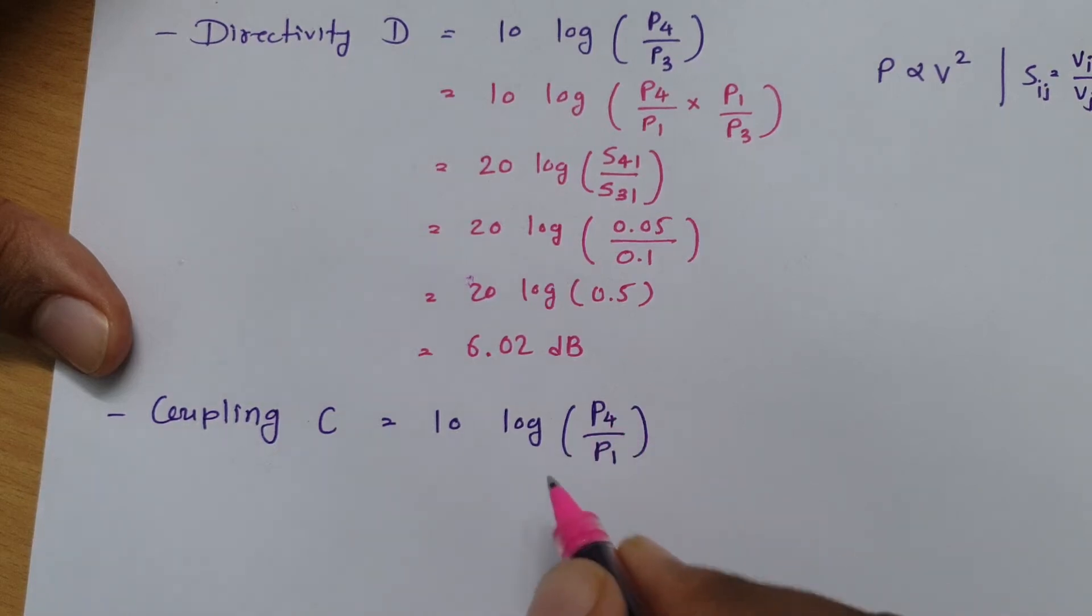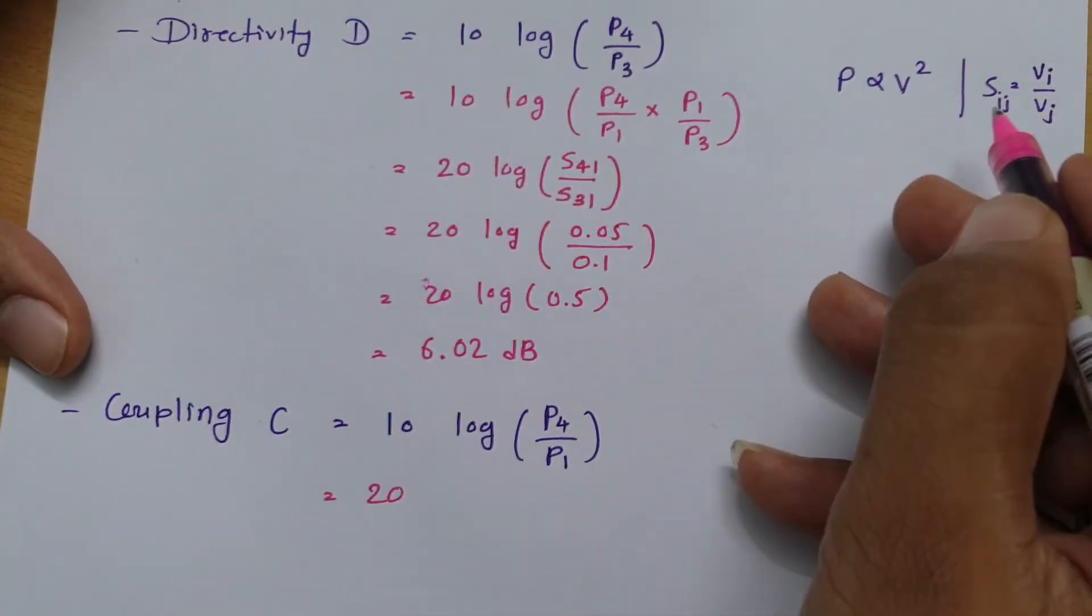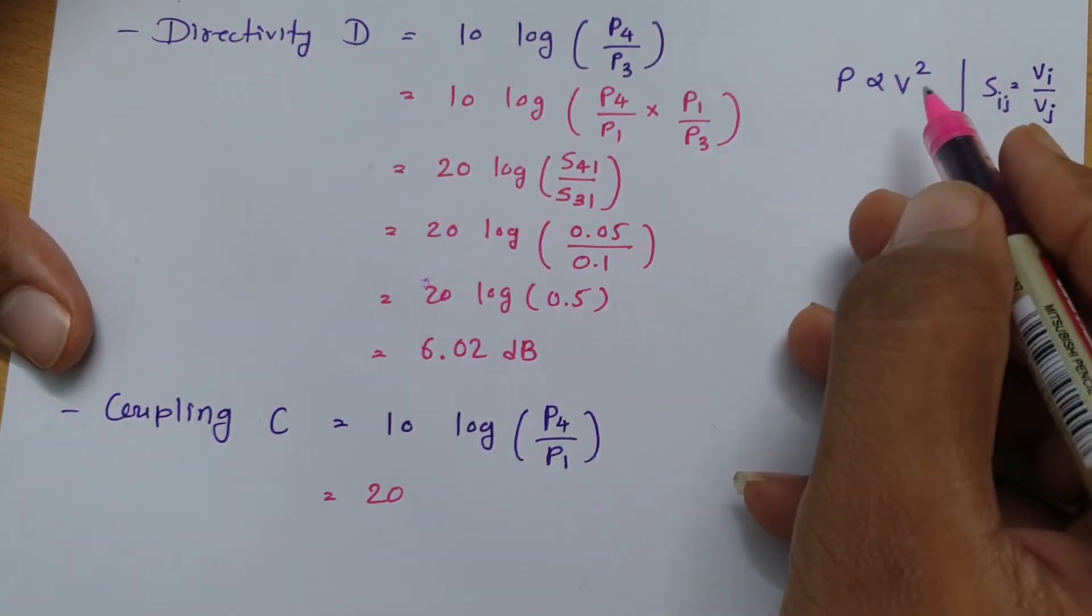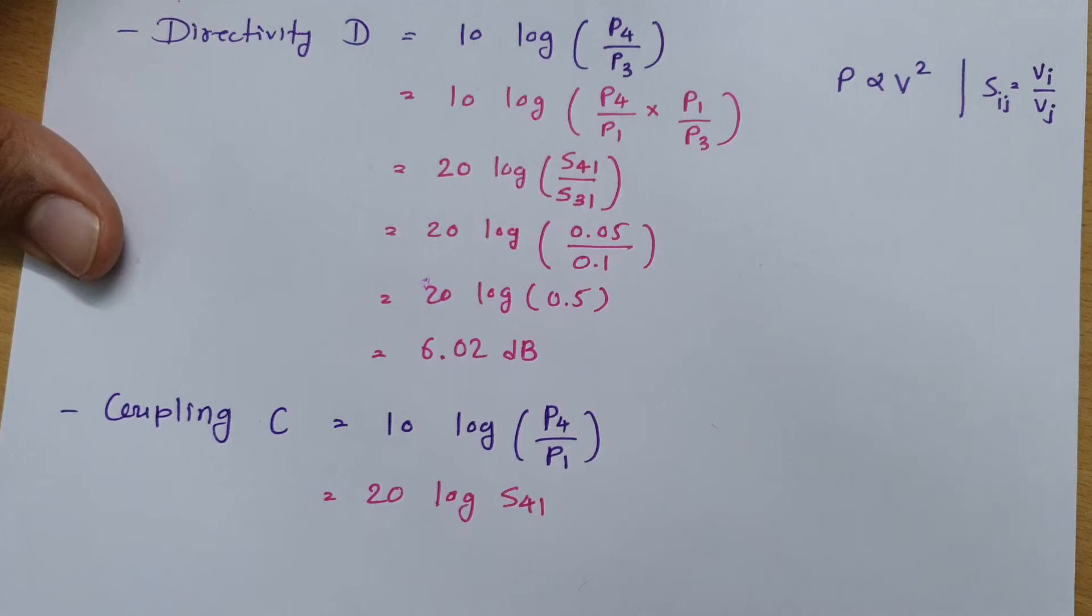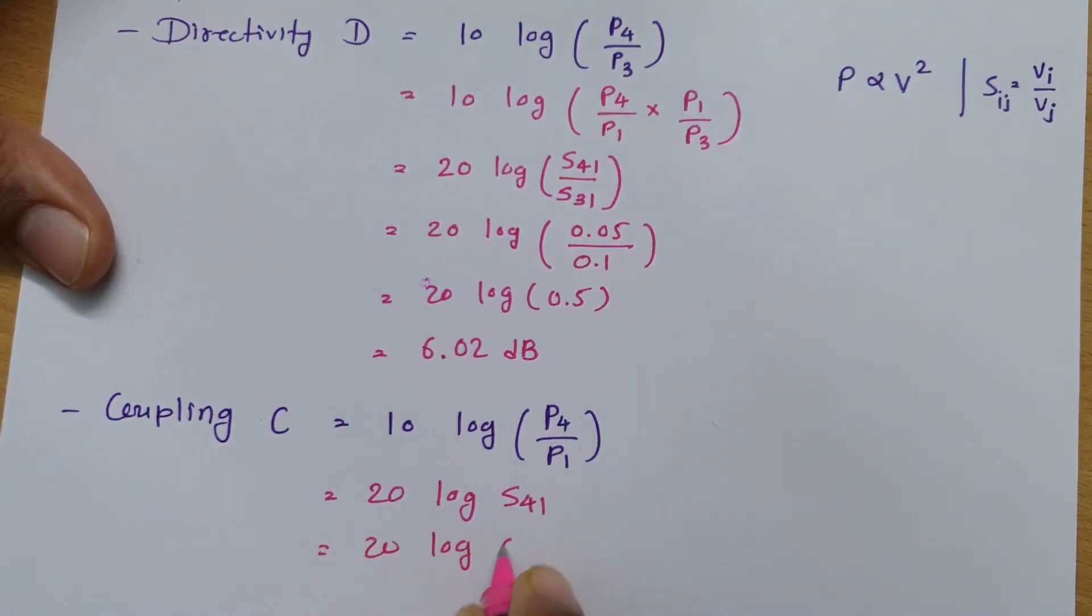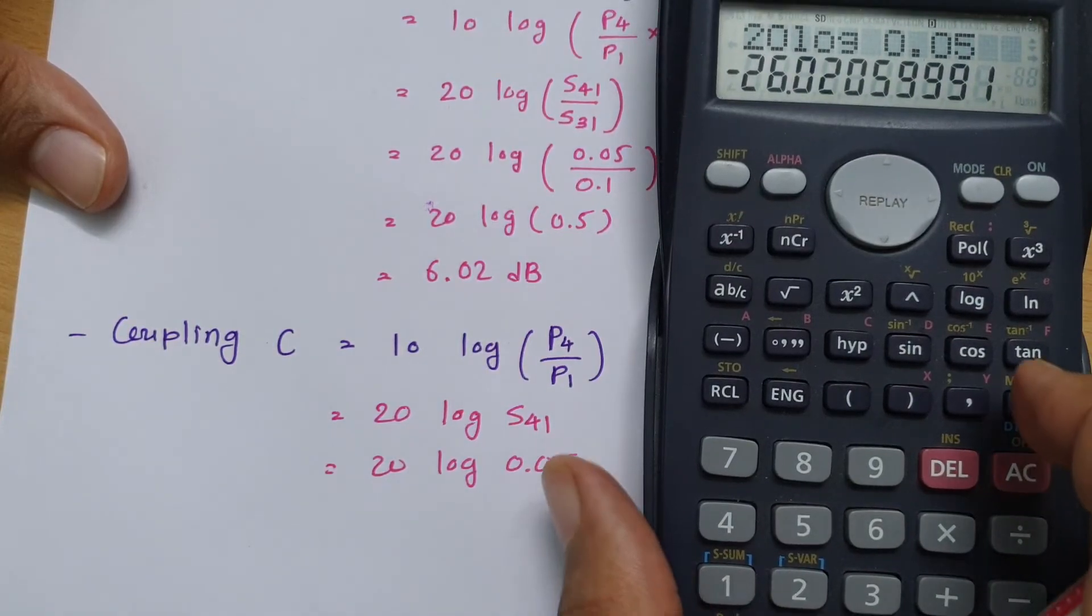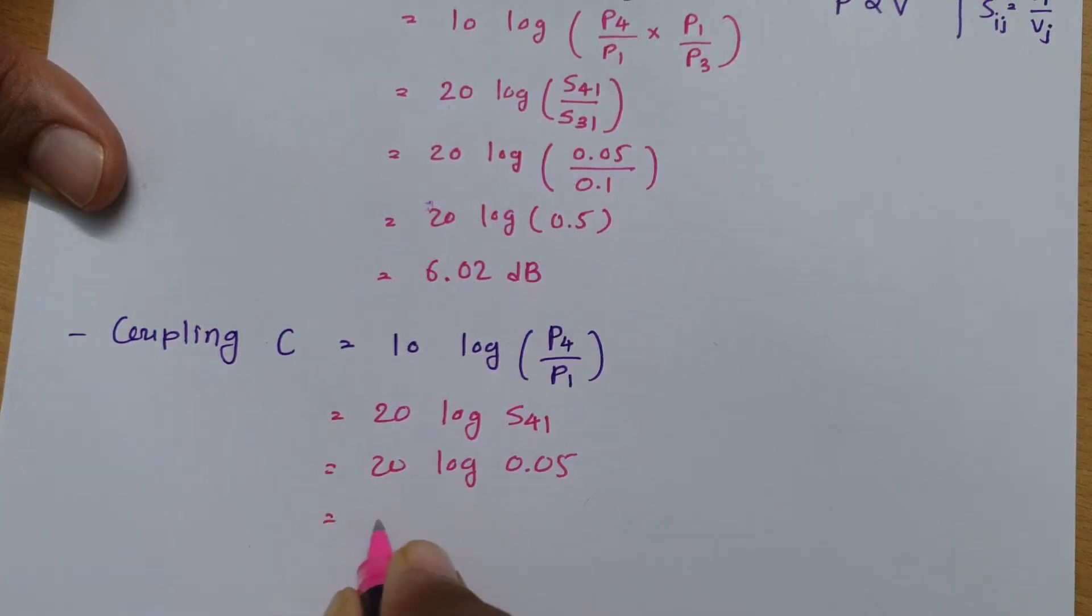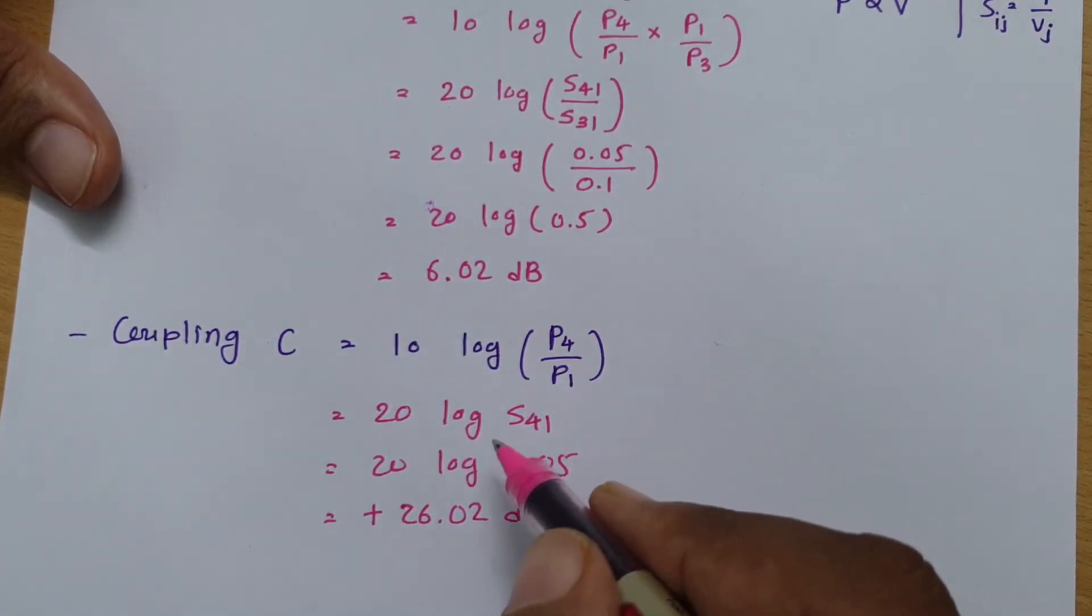When you calculate this in terms of scattering data, P4 by P1 - first I need to write 20 instead of 10. As I have told you, scattering data is actually based on voltage ratio. If you translate that in power ratio, you will have to multiply it by 2 over here with this power. So 20 log of S41. And S41 we have already written, that is 0.05. So 20 log of 0.05. If we calculate this, that is minus 26.02. You just write it as positive, 26.02 dB. That data will be actually negative as we are taking ratio with respect to P1 always, but the value will be positive only.